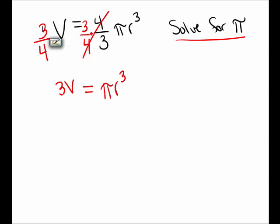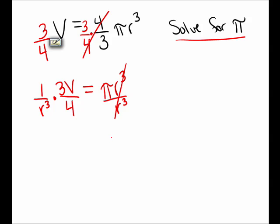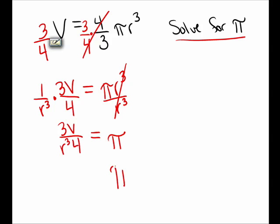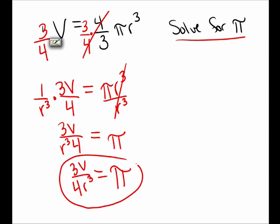And on the left, I have 3V divided by 4. To solve for pi, I need to get r cubed away from pi, so I divide both sides by r cubed. Since I already have a fraction on the left side, I'll think of dividing by r cubed as the same thing as multiplying by 1 over r cubed. On the right side, I'm left with pi. On the left side, I have 3V in the numerator and r cubed and 4 in the denominator, which we write as 3V over 4r cubed. Pi is equal to 3V over 4r cubed.